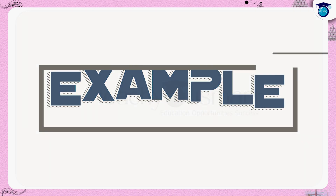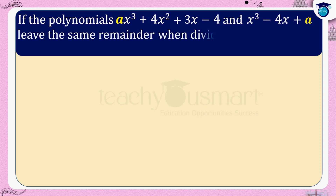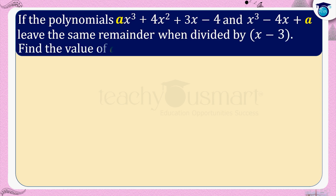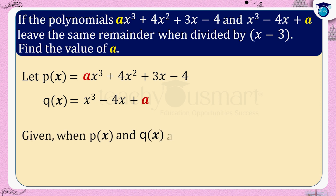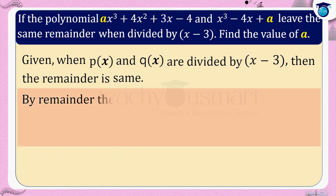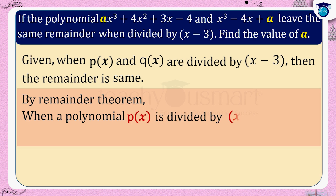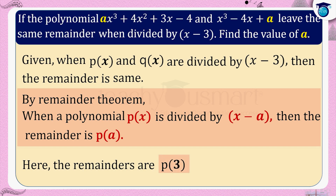Let's do another example. If the polynomials ax cubed plus 4x squared plus 3x minus 4 and x cubed minus 4x plus a leave the same remainder when divided by x minus 3, find the value of a. Let p of x equals ax cubed plus 4x squared plus 3x minus 4 and q of x equals x cubed minus 4x plus a be the given polynomials. Given that when p of x and q of x are divided by x minus 3, the remainder is the same. By the remainder theorem, remainders are p of 3 and q of 3.